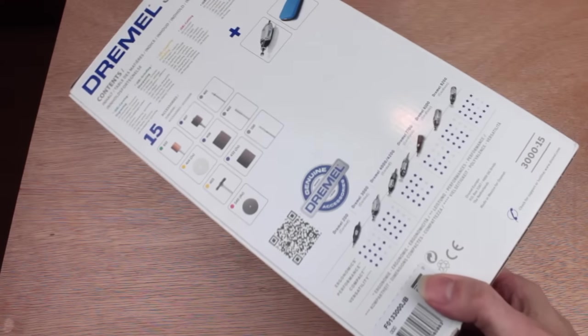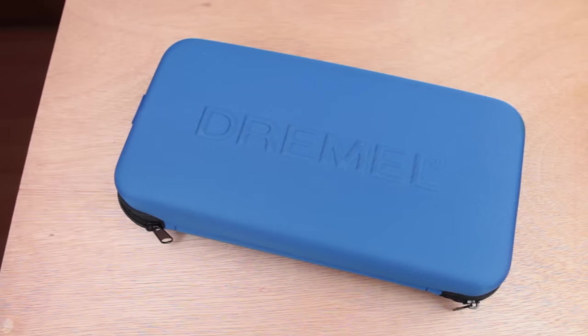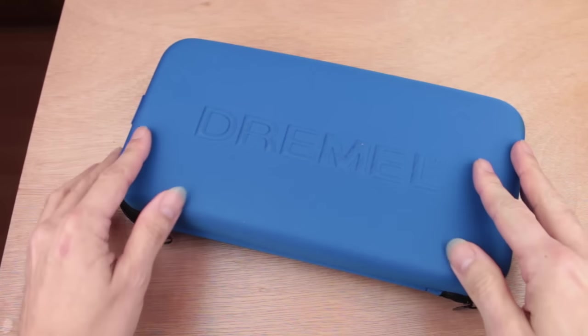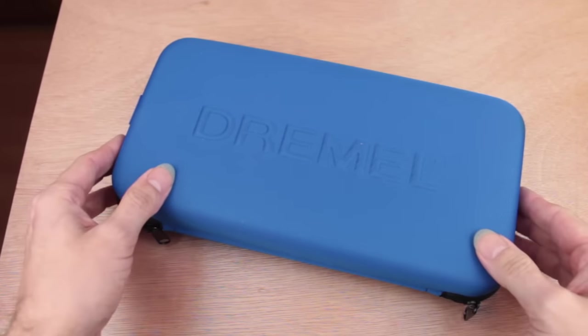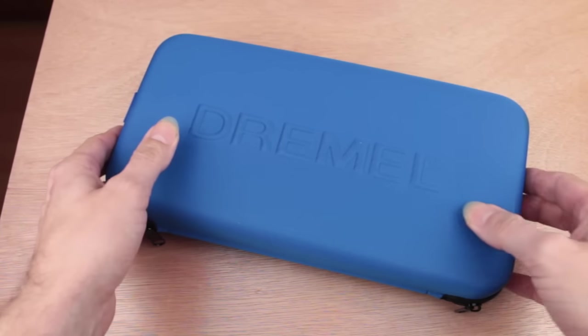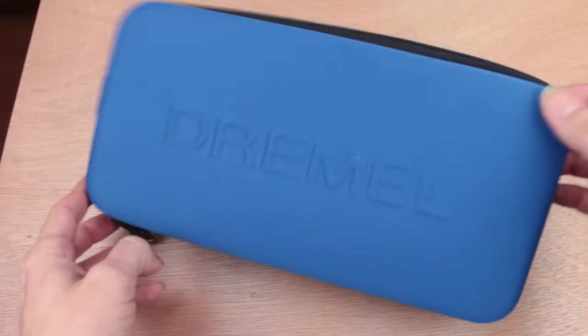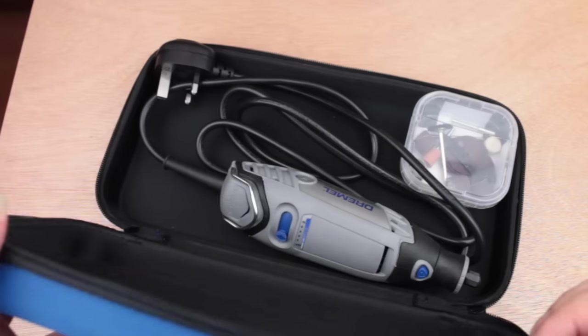Inside the box we have this lovely case that it comes in. It's kind of semi-rigid, a bit like some of the camera cases that you might see around. Zippered all the way around, nice Dremel logo on the front.